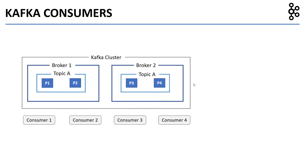Now there is another important concept you have to know regarding consumer groups and partitions. From a consumer group, only one consumer can receive data from a particular partition.